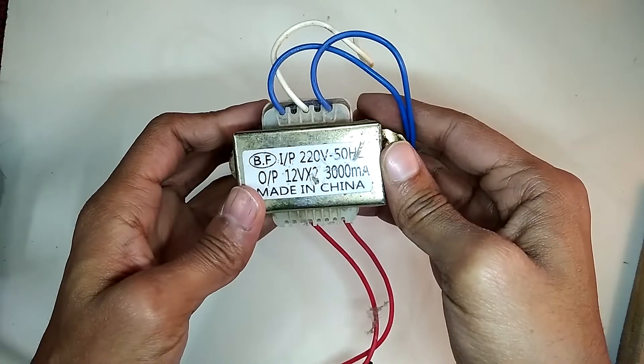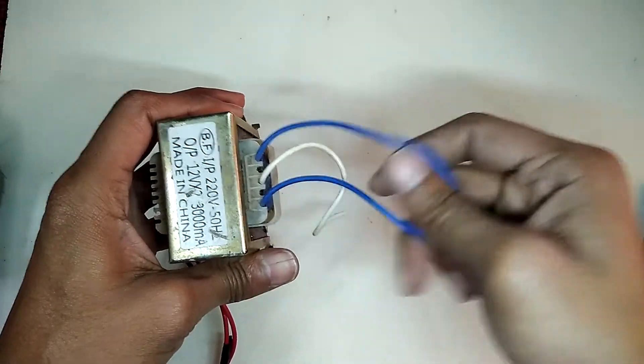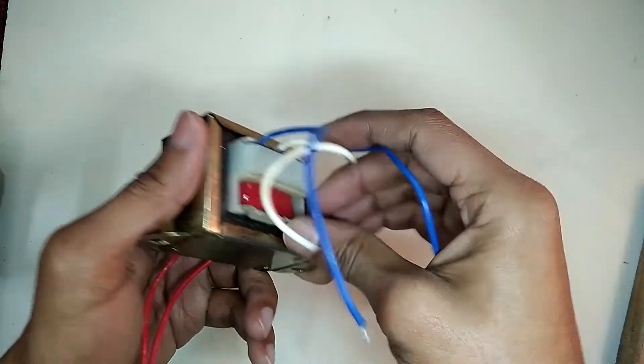Now for making 24 volt output we are going to use these 2 blue wires. We don't need this white wire.